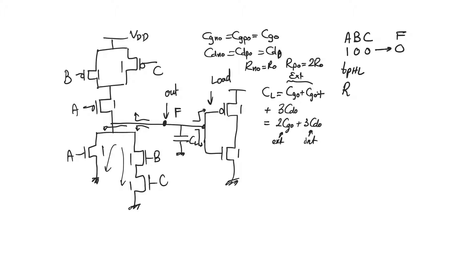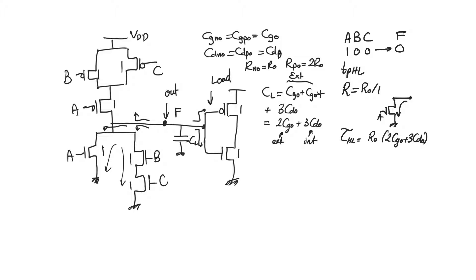The resistance of this pull-down path for input ABC = 1, 0, 0 is through transistor A only. Transistor A has W/L = 1, which means its resistance is R0/1. Therefore, the time constant tau high-to-low is R0 × (2CG0 + 3CD0).